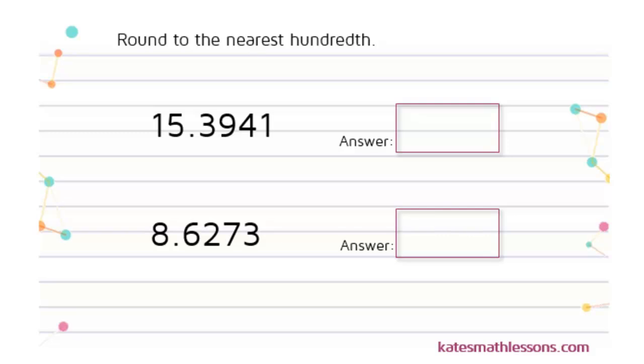In this problem, we've been asked to round these two numbers to the nearest hundredth. Whenever you're rounding, you want to find the place value that they tell you to round to.